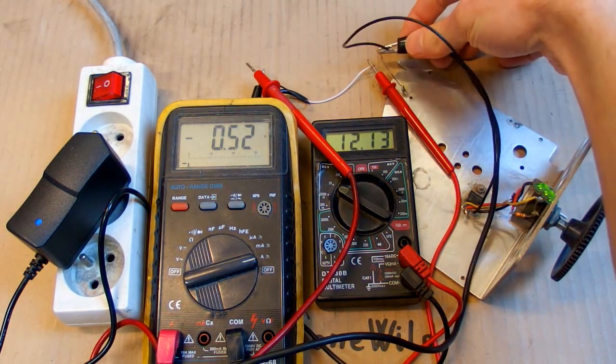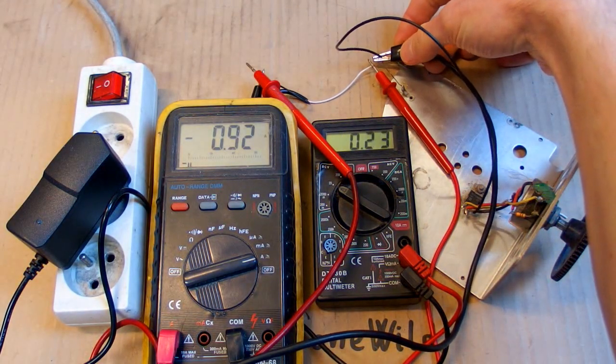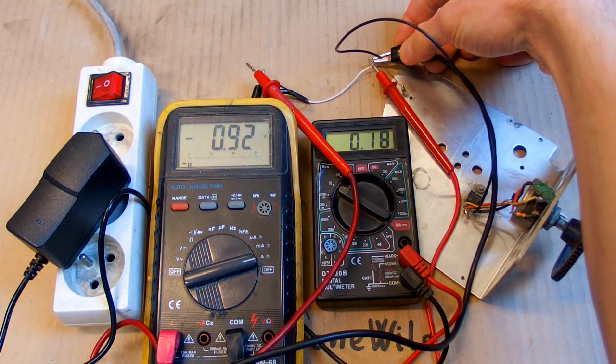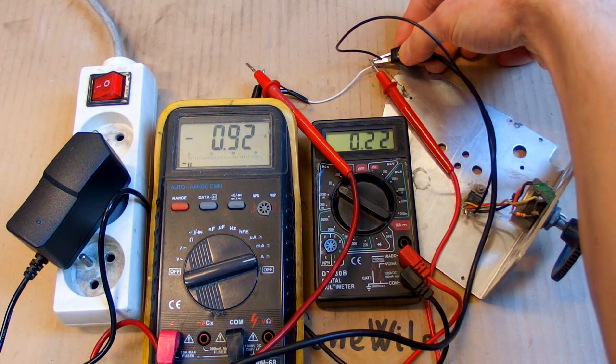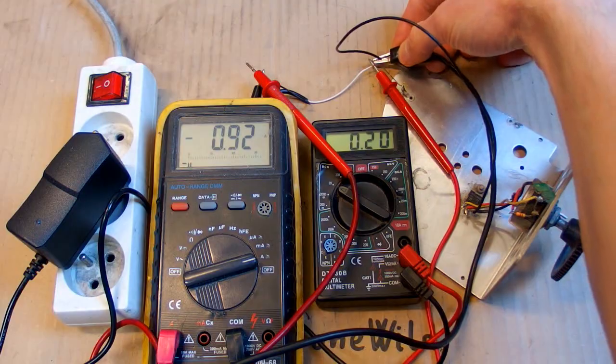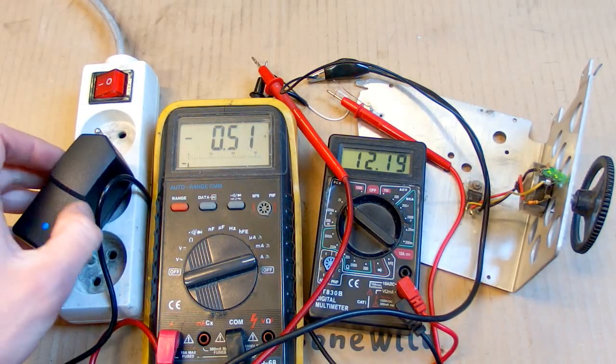Is it short circuit proof? And what is the short circuit current? 0.9 amps. So even in a short circuit, it doesn't give you 1 amp. And now, of course, let's take a look in it.